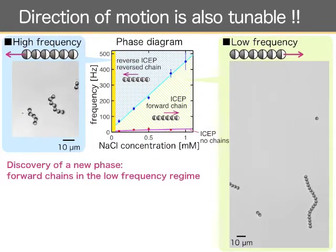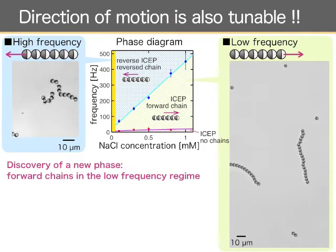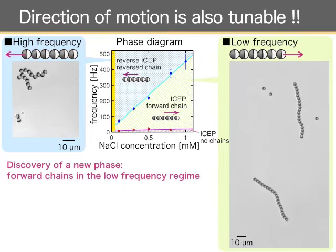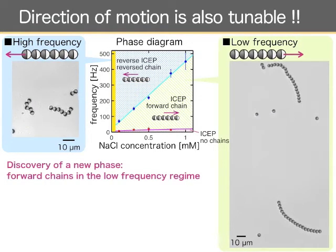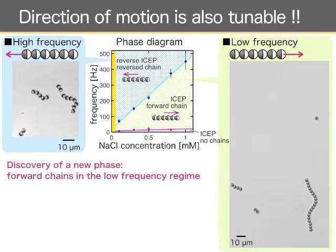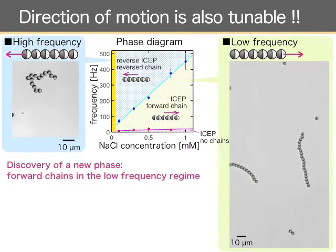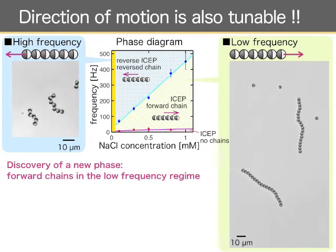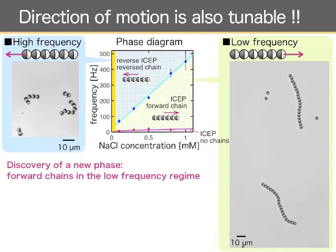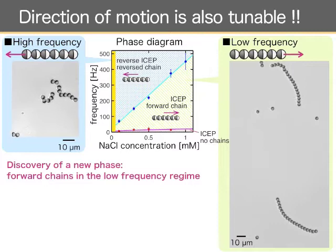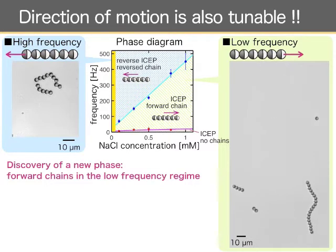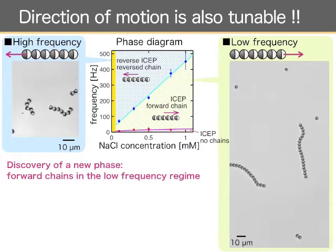Interestingly, we can also control the direction of motion of the Janus particles by changing the frequency of the electric field. In the low frequency regime, the particles move towards their dielectric sides. On the other hand, in the high frequency regime, they move towards their metal sides. In previous works, chain formation was only observed in the high frequency regime, but in this work, we have discovered that chain formation at the low frequency regime is possible by thoroughly exploring the parameter space.